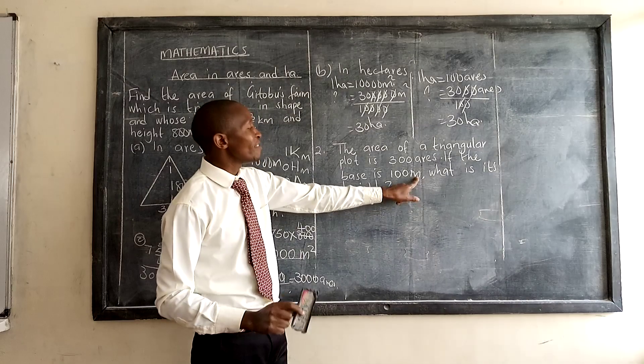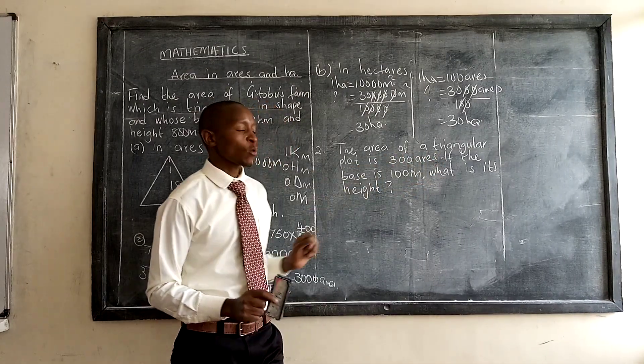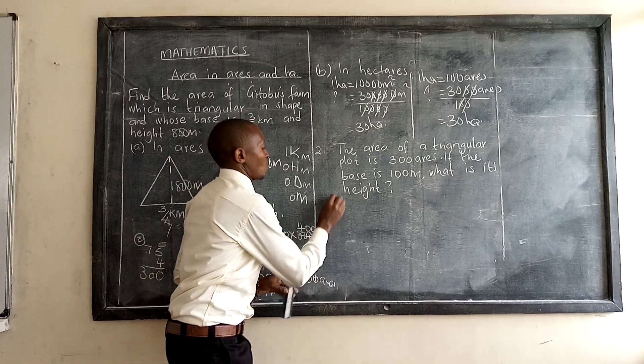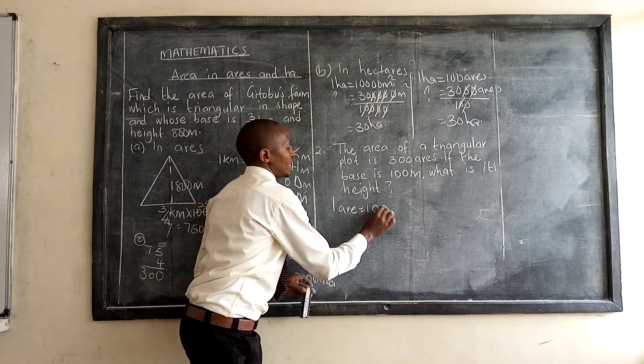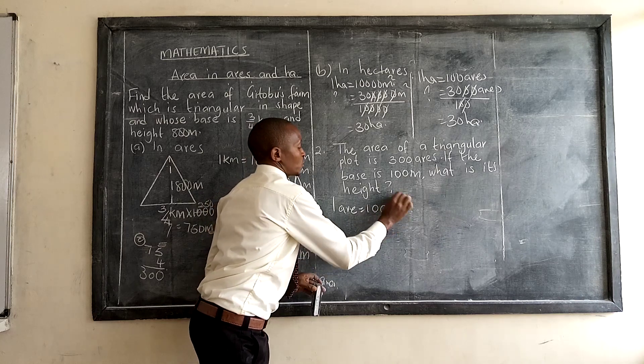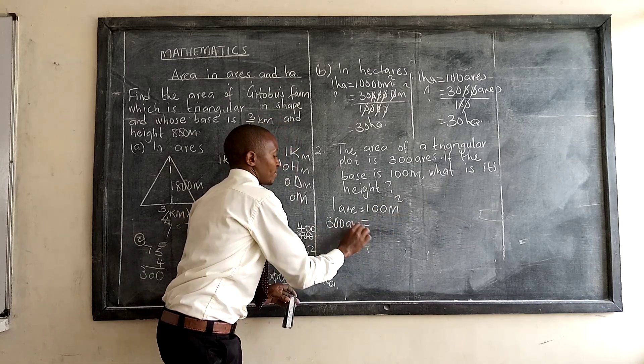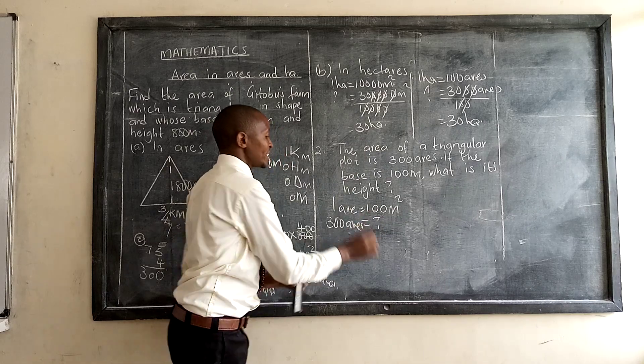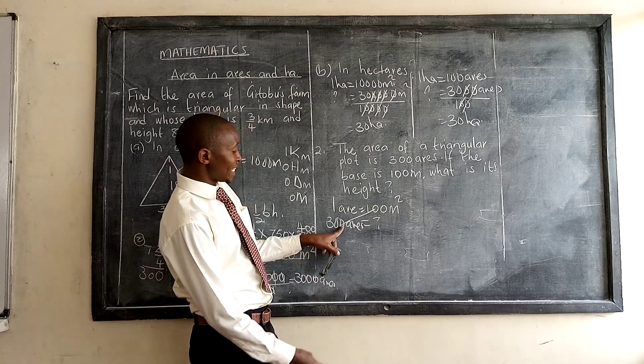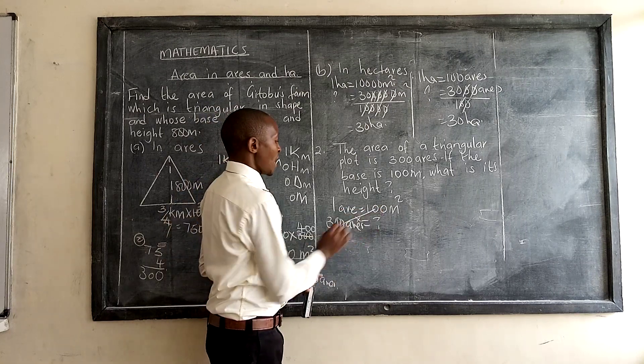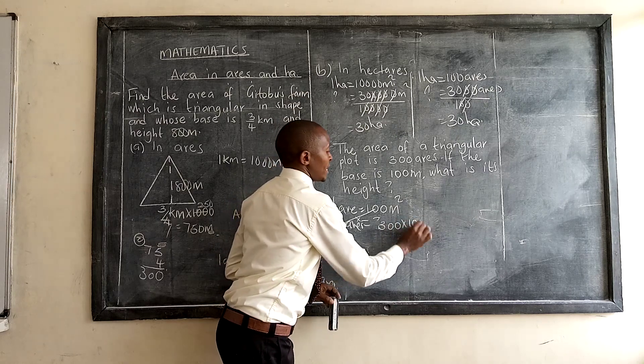So you need to have these airs in square meters. One air is equal to 100 meters square. What about 300 airs? How many meters square will be there? We multiply. That is 300, you just multiply by 100. That is 300 multiplied by 100.